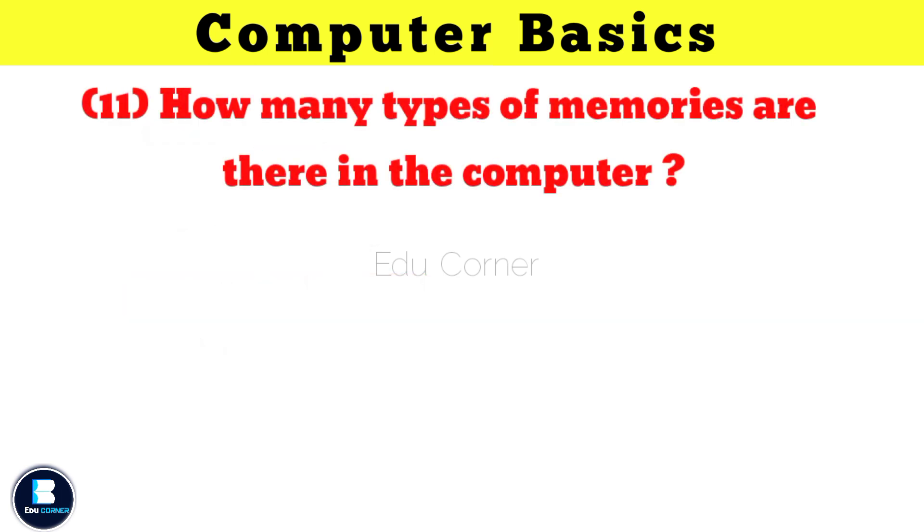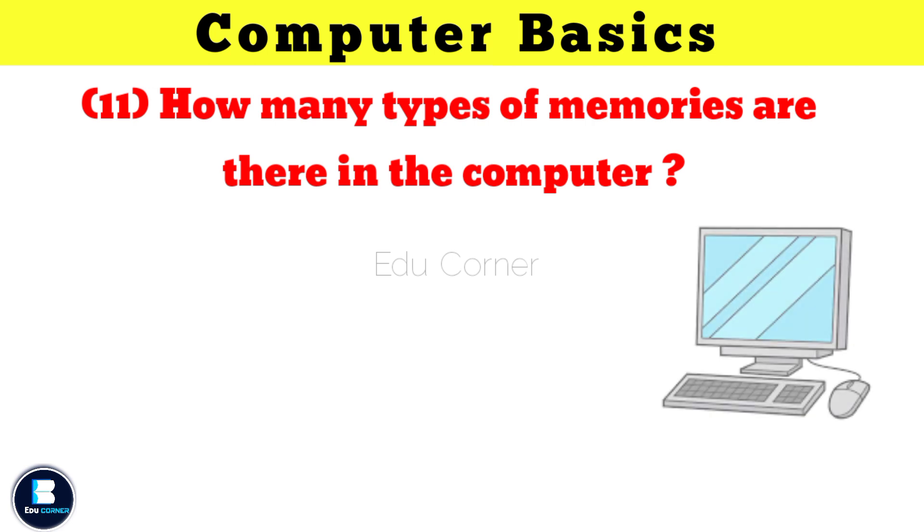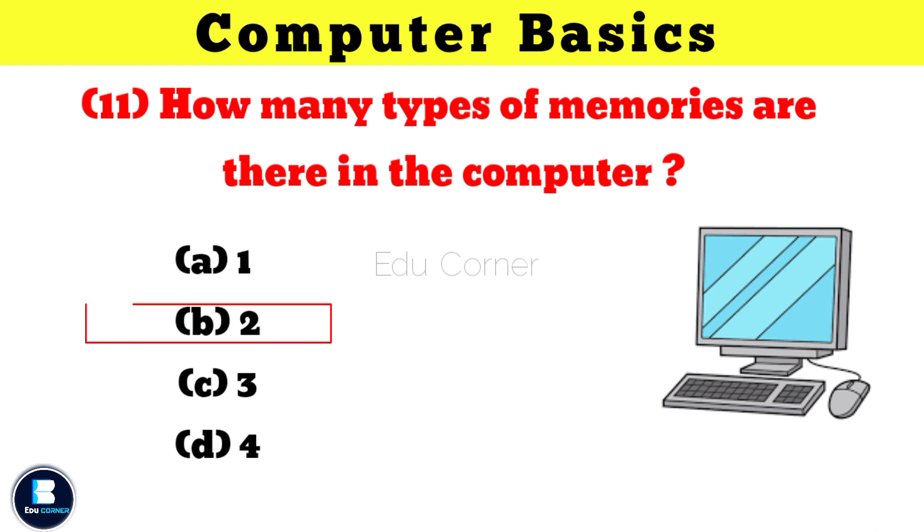How many types of memory are there in the computer? 2 types: 1 is primary, 2nd one is secondary.